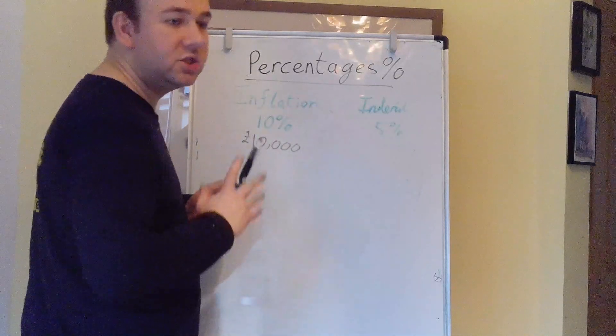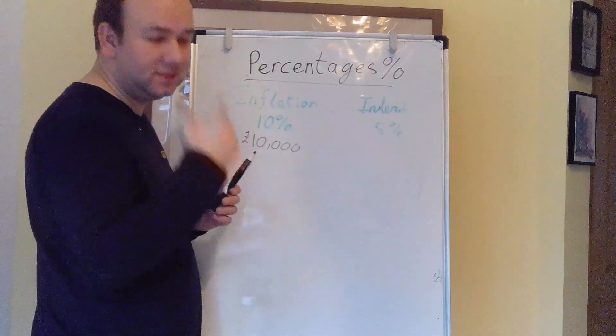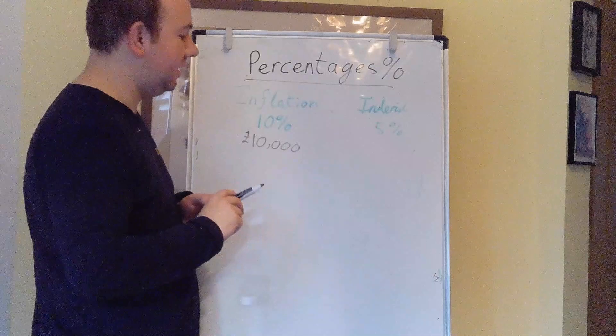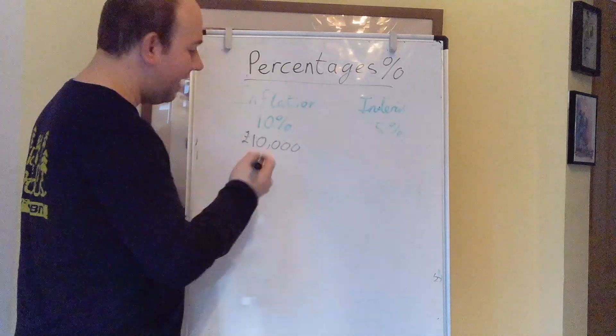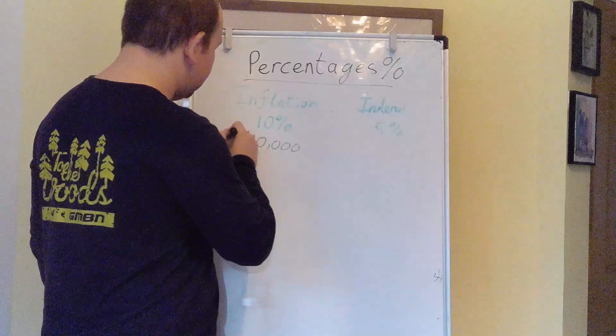Every year the price of that Mars bar is going to increase by 10%. So now you could buy 10,000 Mars bars with your ten thousand pounds. But how much money would you need in three years' time to buy that same quantity of Mars bars?